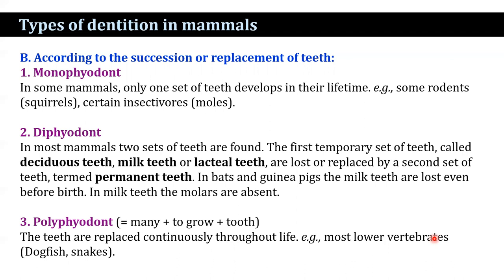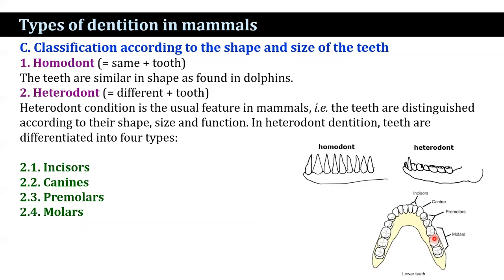Teeth are also classified according to shape and size as homodont and heterodont. In homodont dentition, the teeth are similar in shape, as found in the dolphin. In heterodont dentition, which is the usual feature of mammals, teeth are distinguished according to their shape, size, and function.